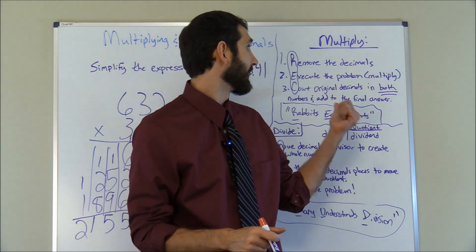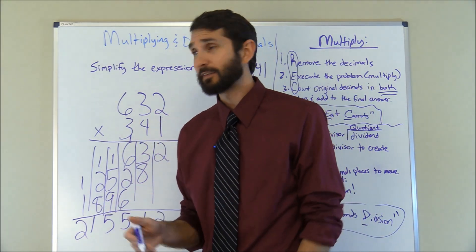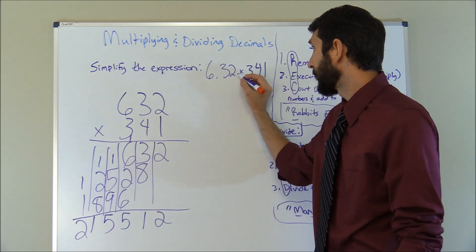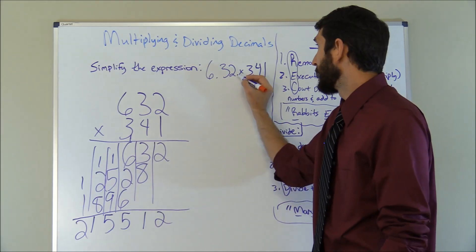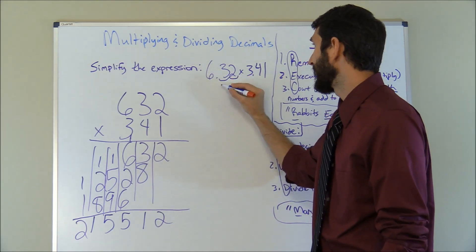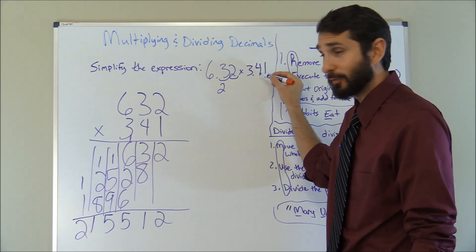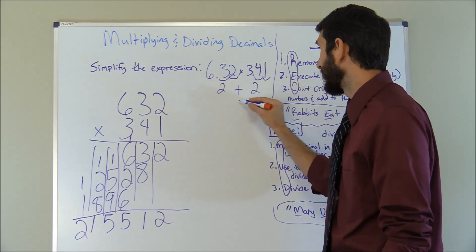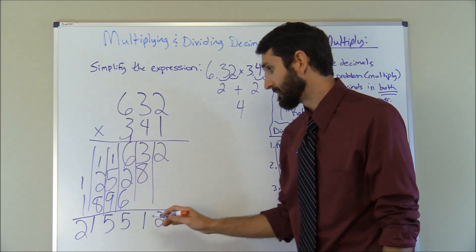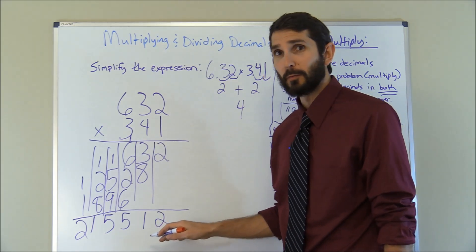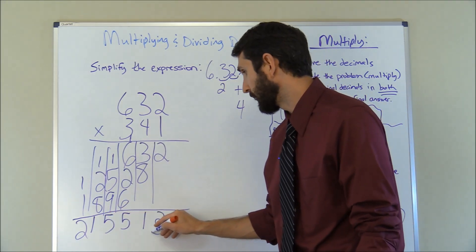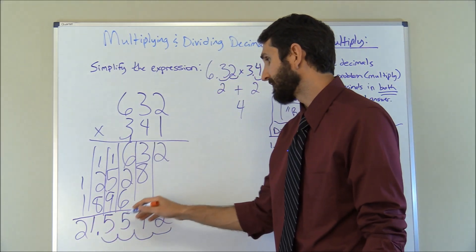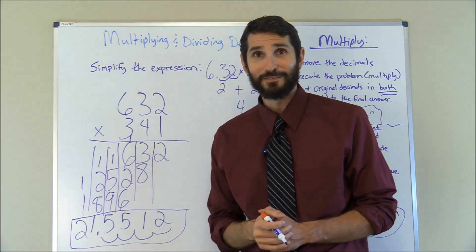We're not done yet — we have the C part of REC. We count the original decimal places and put them back in. Going right to left in 6.32, that's two decimal places. In 3.41, that's also two decimal places. Two plus two gives us four decimal places total. Coming down to our answer 215512, we place the decimal four places from the right — one, two, three, four — giving us 21.5512. That's our answer.